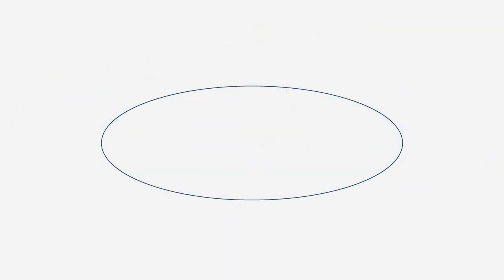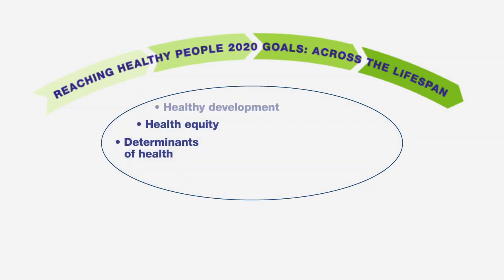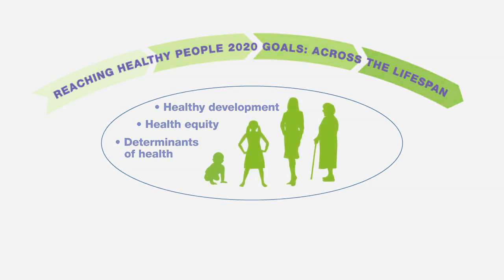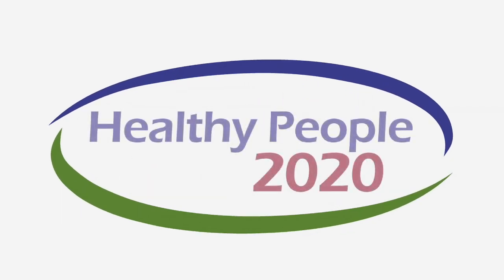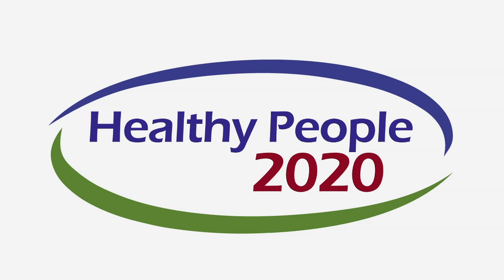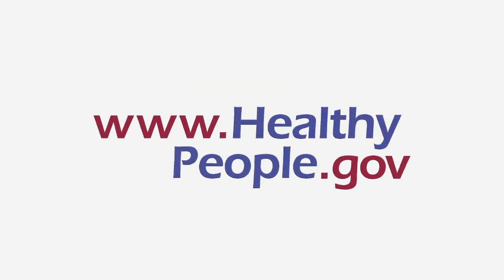Healthy People 2020 places renewed emphasis on determinants of health, health equity, and healthy development throughout all stages of life. By addressing determinants of health and promoting health equity and healthy development across the lifespan, Healthy People 2020 provides a framework for a society in which all people can be healthy, both now and for generations to come. For more information, go to HealthyPeople.gov.